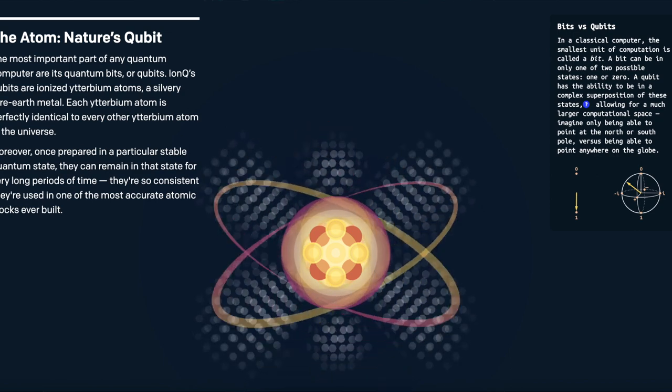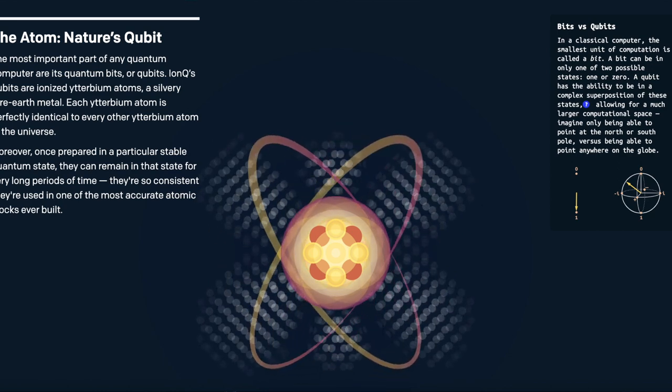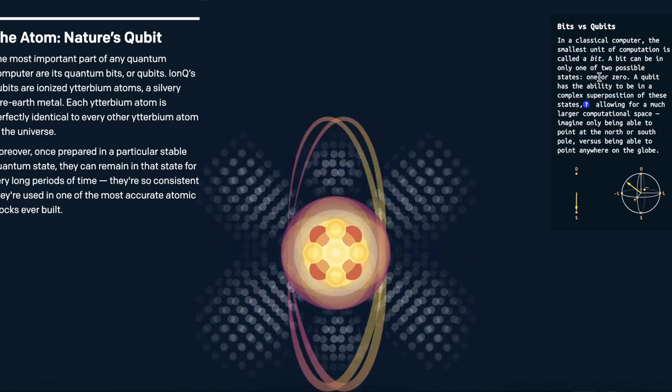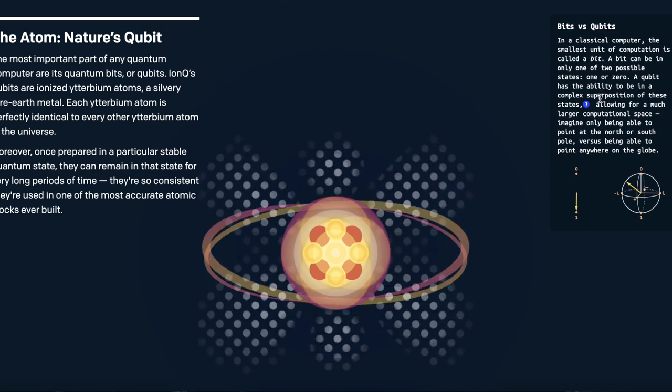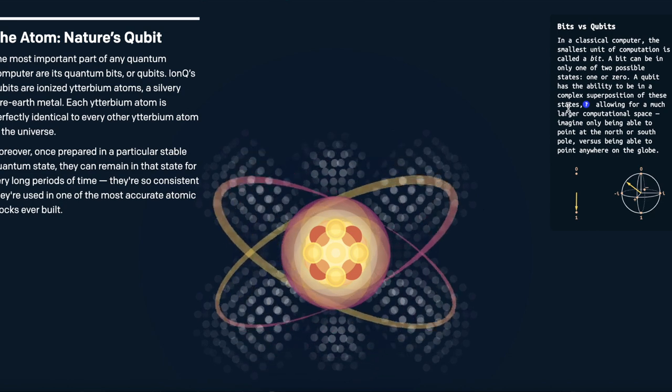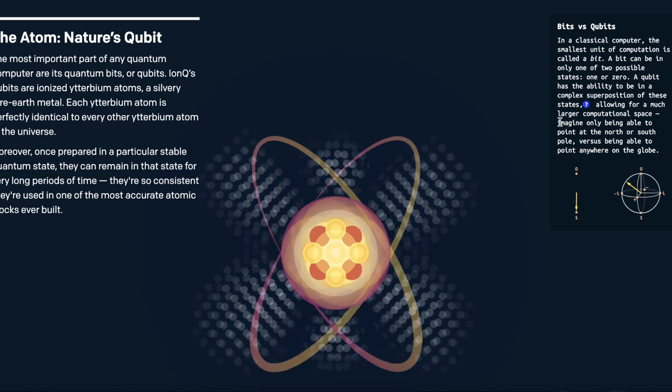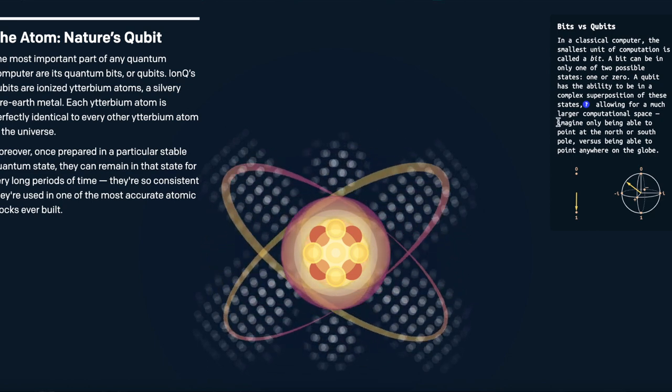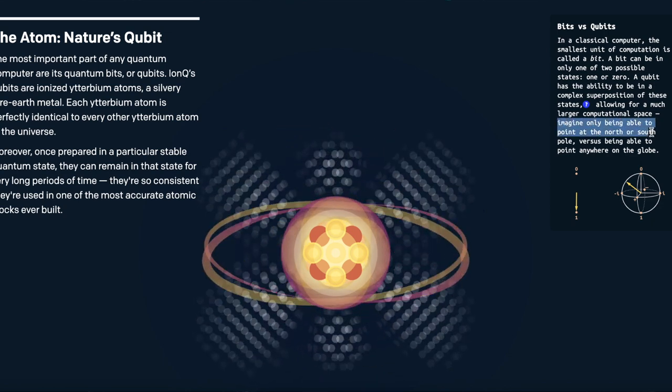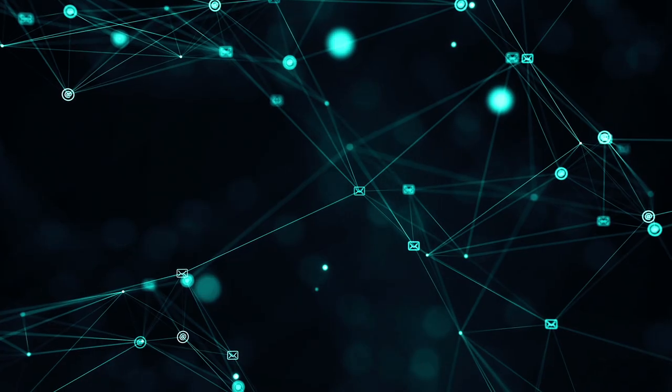By a stark comparison, in a classical computer, the smallest unit of computation is called a bit. A bit can only be in one of two possible states, a 1 or a 0, whereas a qubit has the ability to be in a complex superposition of these states, allowing for a much larger computational space. On their website, IonQ actually gave a pretty cool metaphor to help visualize a standard computer versus a superposition in a quantum computer. Imagine only being able to point at the north and south pole versus being able to point anywhere on the globe. That's the power of quantum computers.